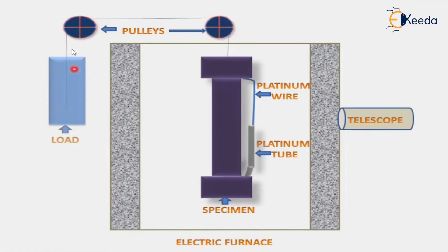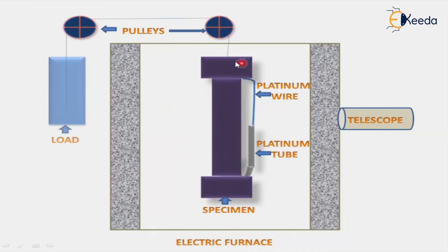One end of the pulley is connected to the specimen and the other end is connected to the load — the weight. Due to this weight, the specimen undergoes tension. We are applying a physical load manually, and at the same time the furnace temperature gives a lot of impact on the material. Temperature is also a load. We are giving constant load — the load is not going to be varied — whether it is a physical load or temperature.